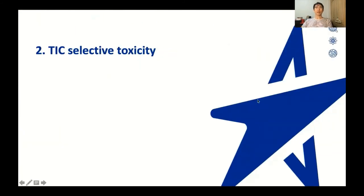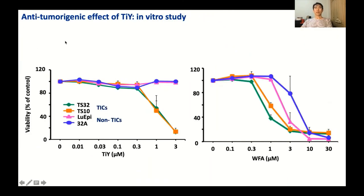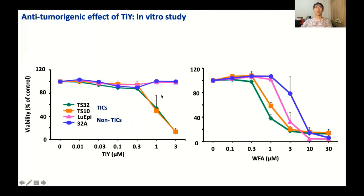The second feature of TiY was its anti-TIC effect. I investigated the anti-TIC activity and general toxicity of TiY in comparison with Withaferin A, which is known as a Vimentin inhibitor. Unsurprisingly, TiY showed clear anti-TIC activity at higher concentrations. More interestingly, it showed stronger selectivity towards TICs and lower toxicity to non-TICs and normal tissues than Withaferin A, as you can see in this data.